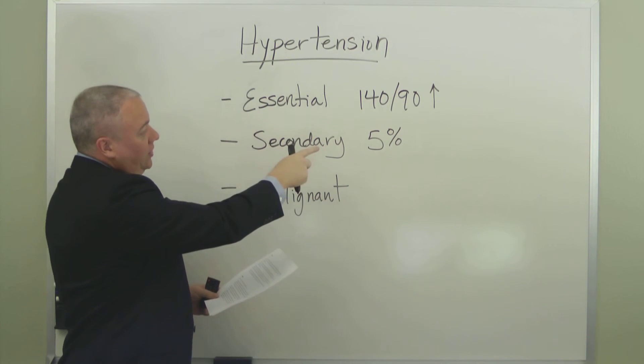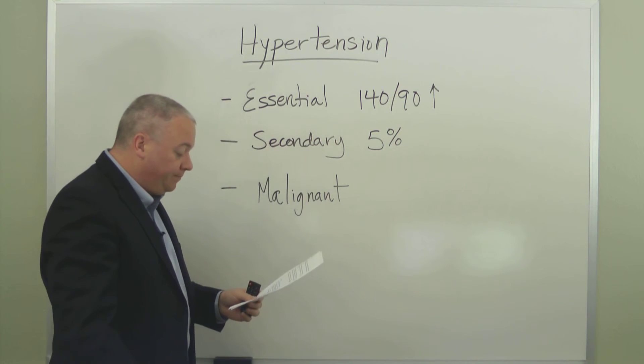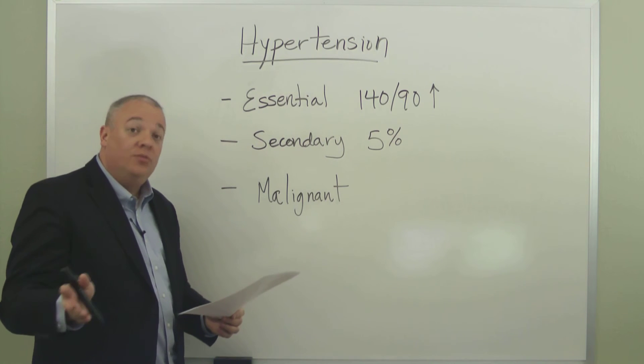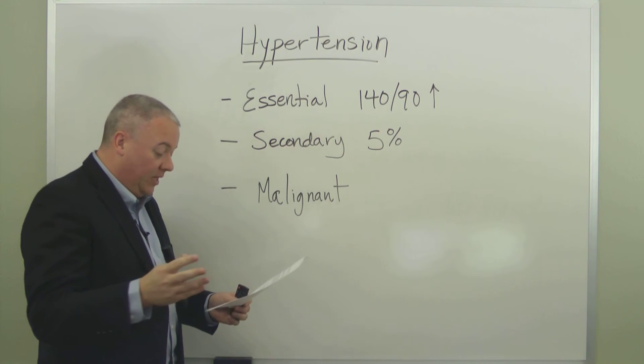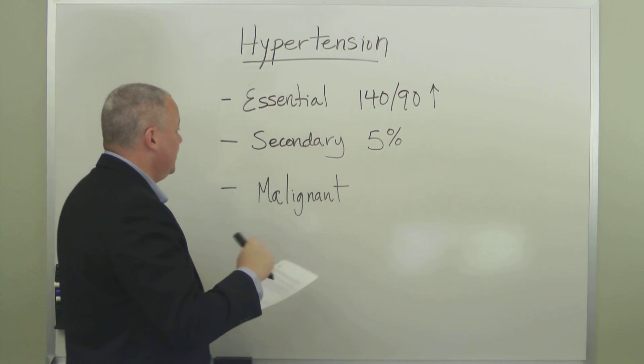Secondary hypertension, 5% of people have that, and it's usually due to another disease, renal disease, renal artery stenosis, things like this.